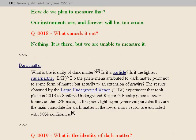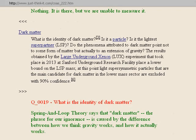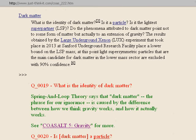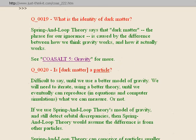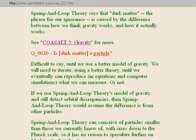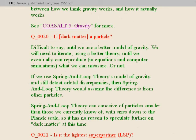Next section: dark matter. What is the identity of dark matter? Question nineteen: Spring-in-Loop Theory says dark matter is the phrase for our ignorance, caused by the difference between how we think gravity works and how it actually works. Is dark matter a particle? That's difficult to say until we use a better model of gravity. We need to iterate using a better theory until we can reproduce in equations and computer simulations what we can measure. Spring-in-Loop Theory can conceive of particles smaller than those we currently know of, with sizes down to the Planck scale.